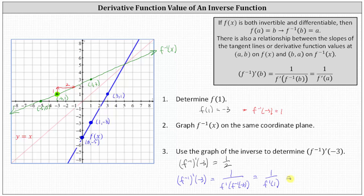So now we have f inverse prime of negative three is equal to one over f prime of one. Let's go ahead and find the slope of the tangent line to f of x at x equals one, which will give us this derivative function value. Looking at the graph of f of x, if we locate the point where x equals one, that's this point right here. If we sketch a tangent line, we get the same line. And notice the slope of this line would be positive two, because if we go up two units and right one unit, we find another point on the line. So applying this to our formula, we have one divided by two, or one half, which matches what we found graphically.